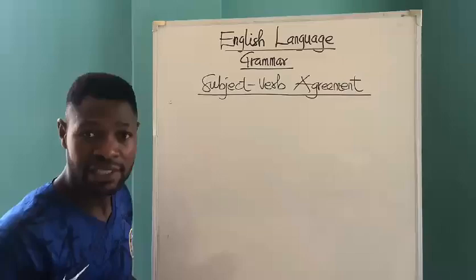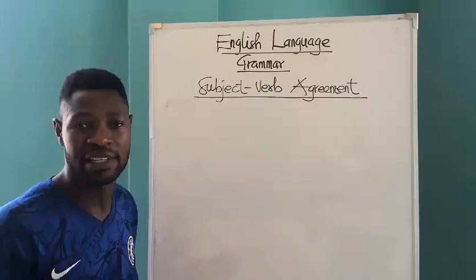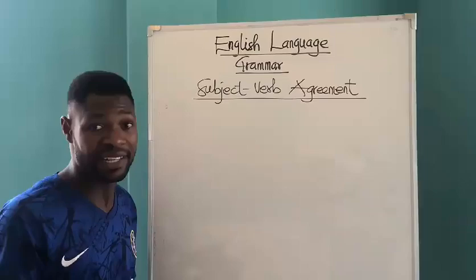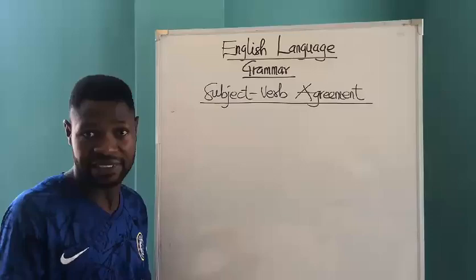Estimable people, today we will be looking at subject-verb agreement. Some call it concord. There should be an agreement between the subject and the verb in the statement. In every sentence that we write or say, we always use a subject and an object.